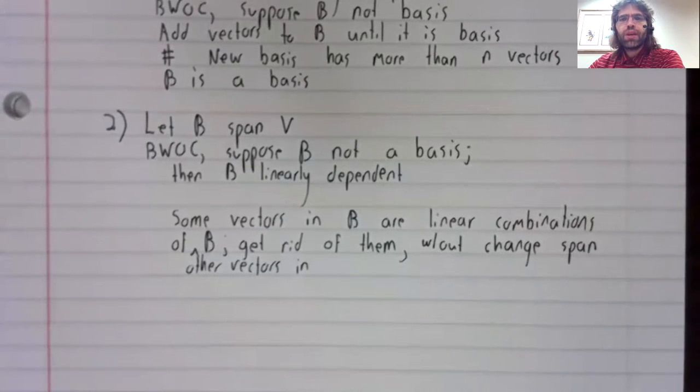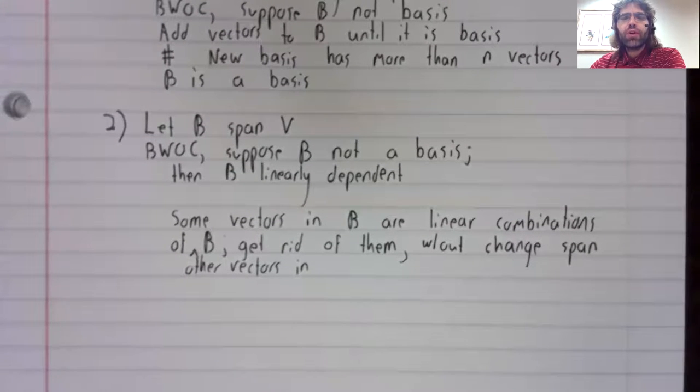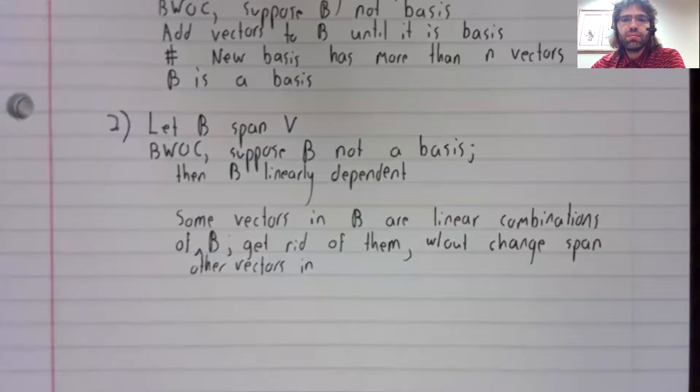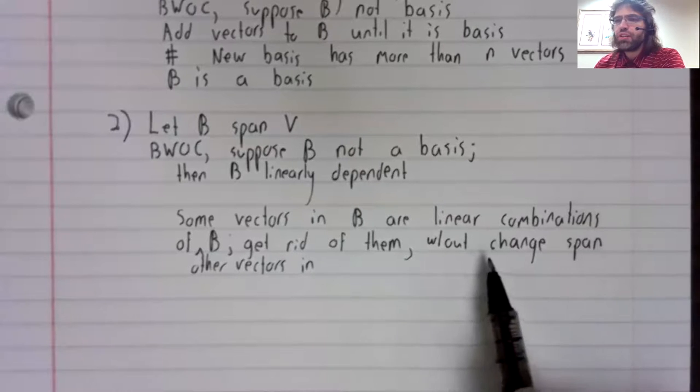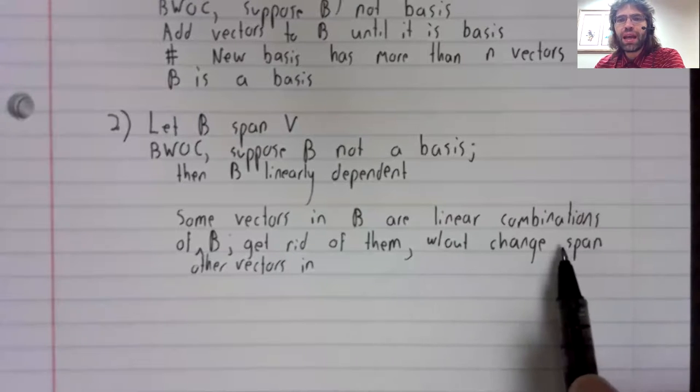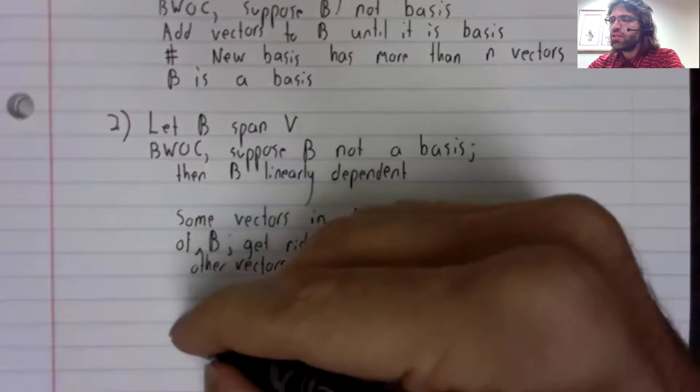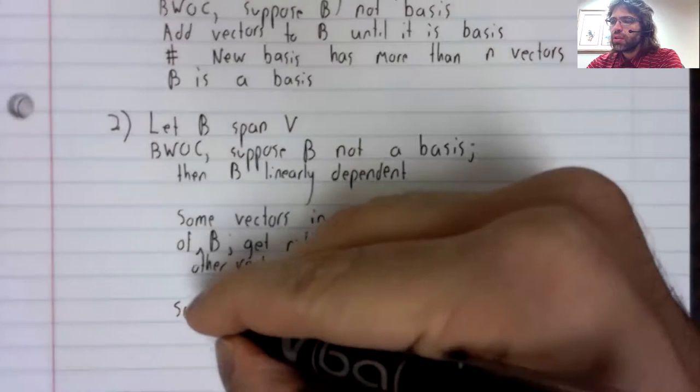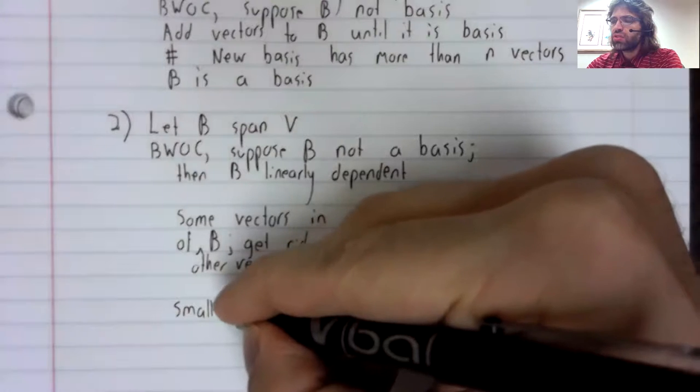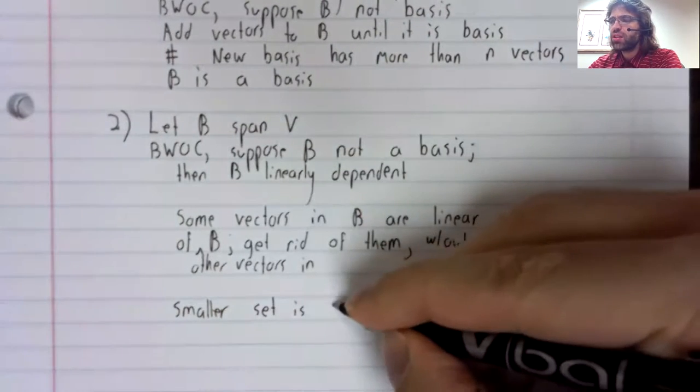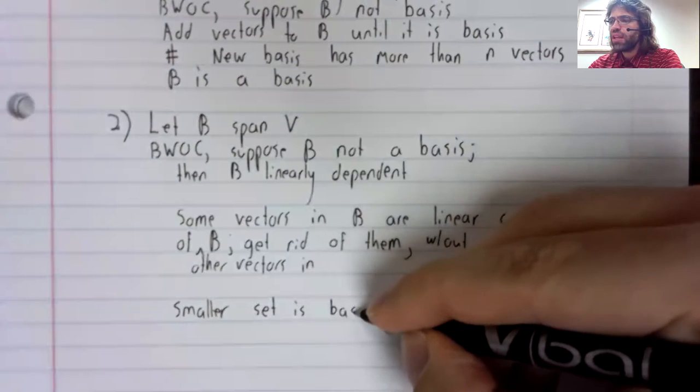After we've gotten rid of every vector in B that is a linear combination of other vectors in B, we haven't changed the span. And now we're linearly independent. So this smaller set is a basis.